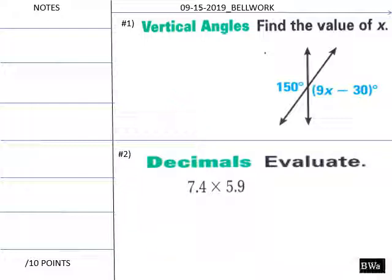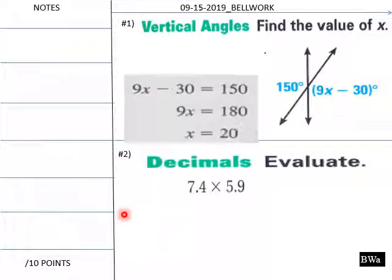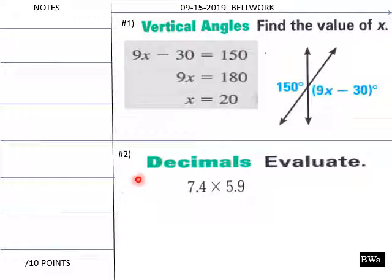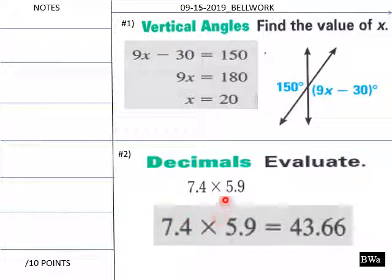Okay, welcome back. Students, here are your solutions. Number 1: x would equal 20. As we know, this has to equal 150. And then when you multiply through, it gets 43.6.